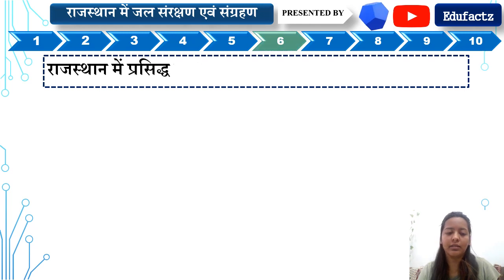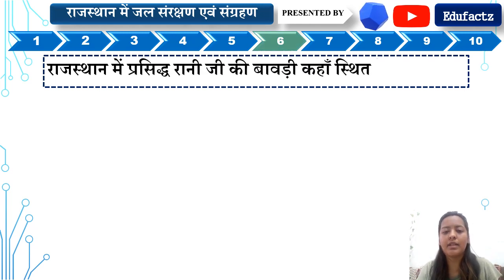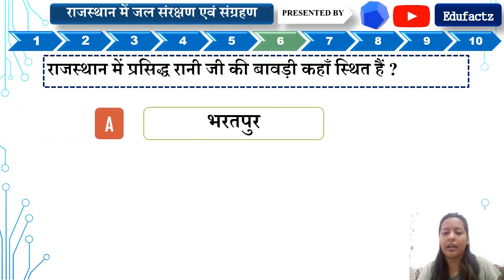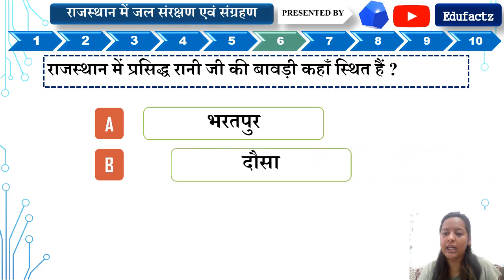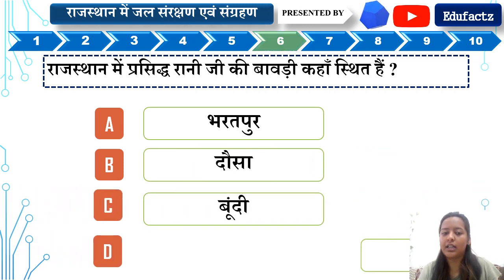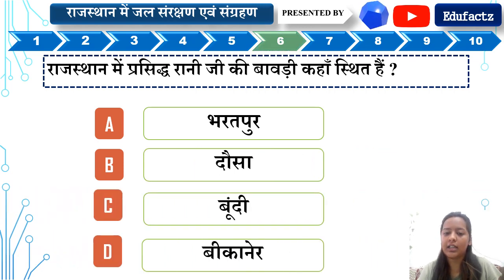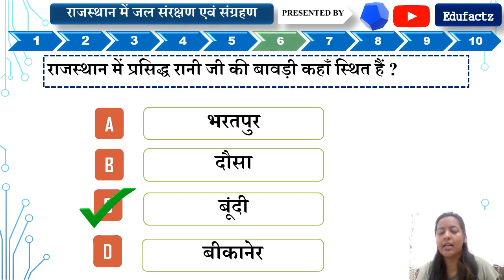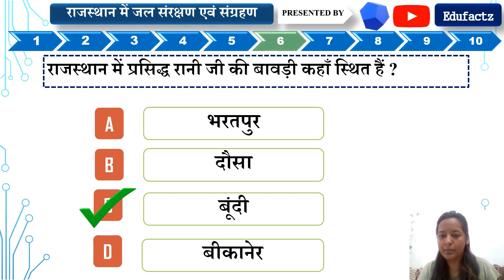Next question. Rajasthan mein prasiddh Rani Ji ki Bavadi kahan sthit hai? A — Bharatpur, B — Dosa, C — Bundi, D — Bikaner. Iska right answer hai Option C — Bundi. Rajasthan mein prasiddh Rani Ji ki Bavadi Bundi mein sthit hai.